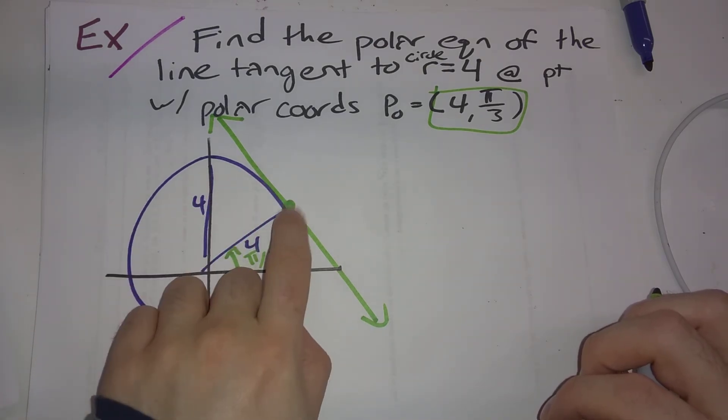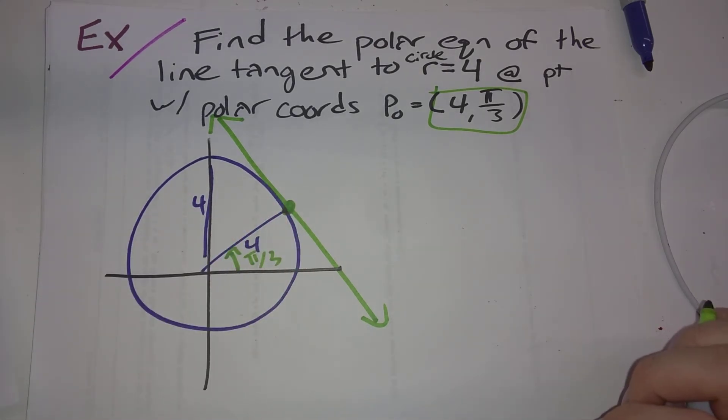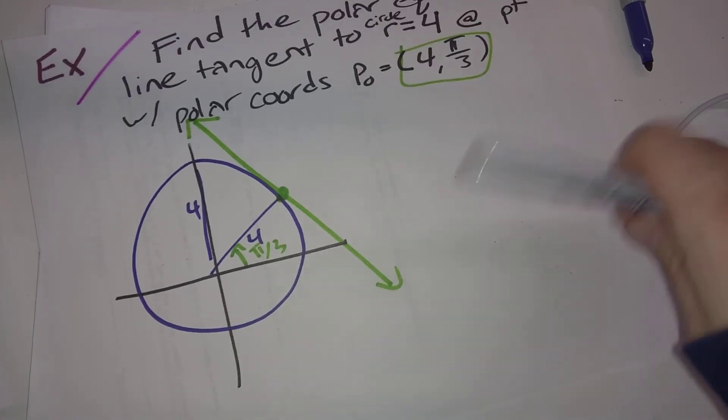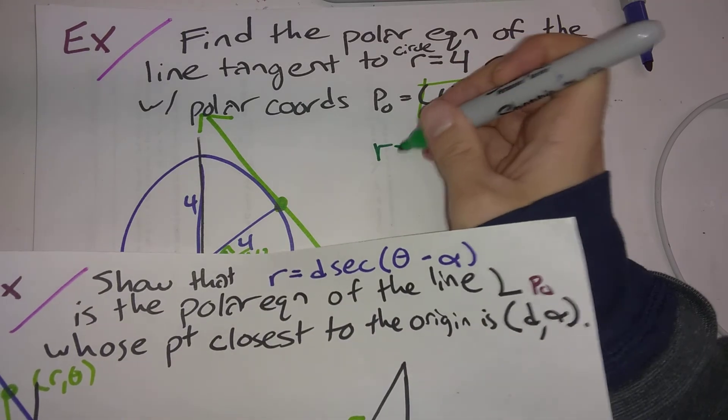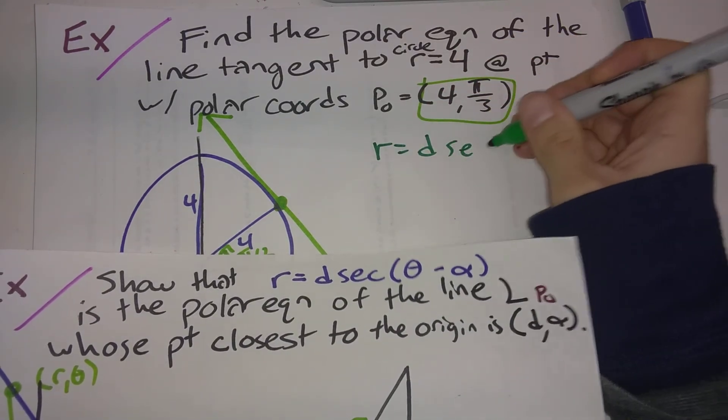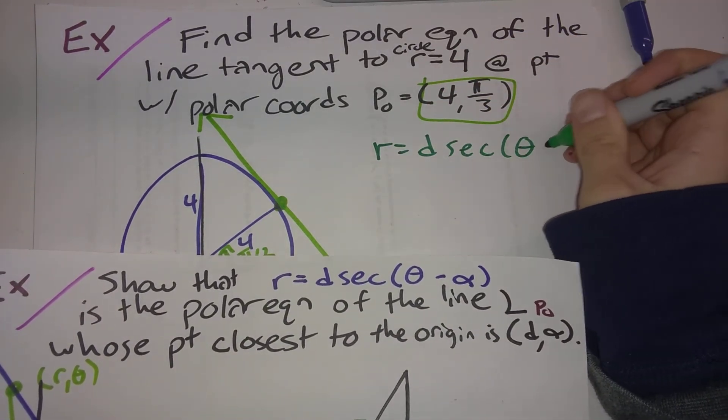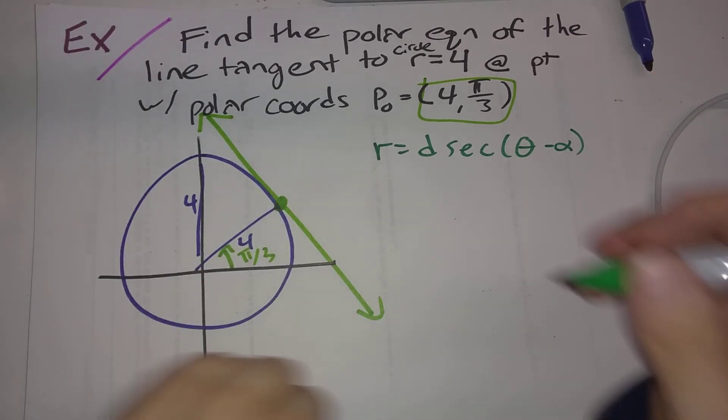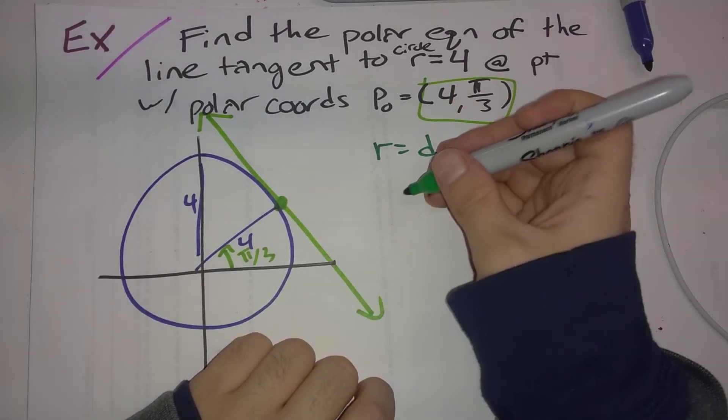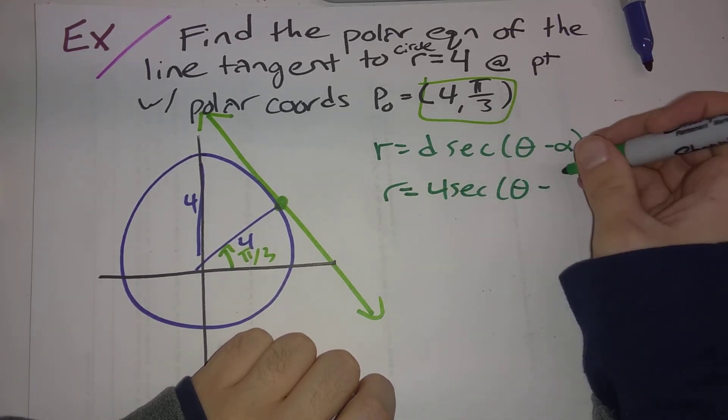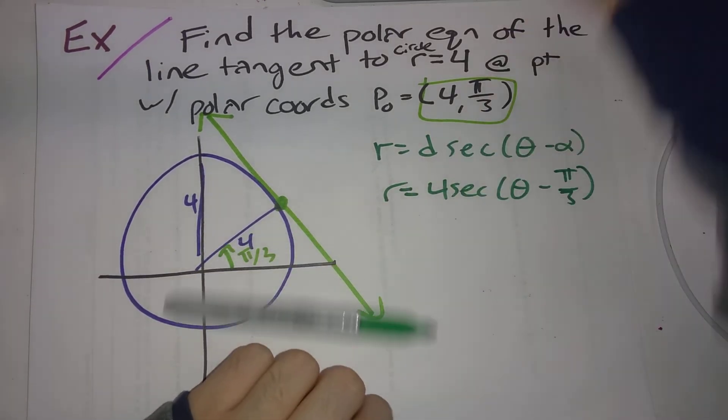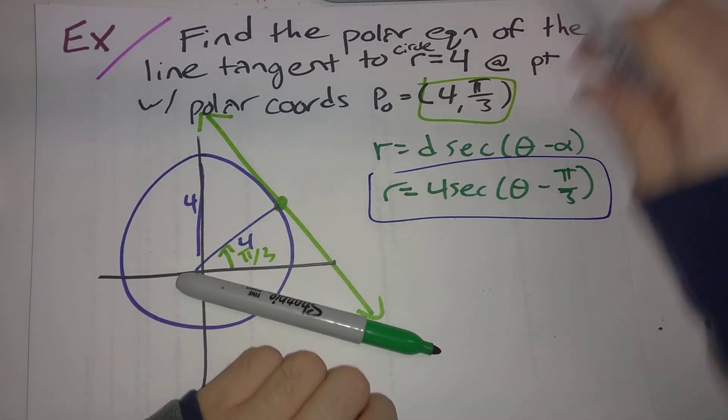Every point, other than this point on the line, is more than 4 units away. So we can just know that the equation is going to be R is D times secant of theta minus alpha. And plug in D here is 4 secant of theta minus pi over 3. And there is our final answer.